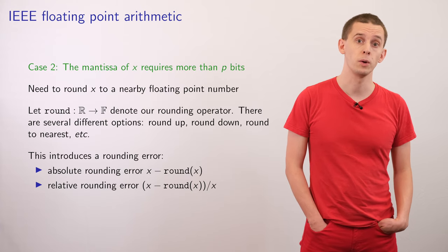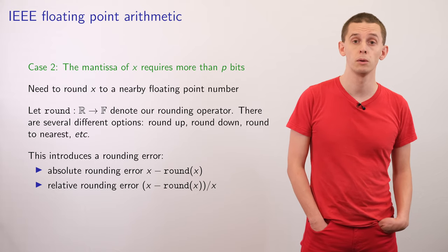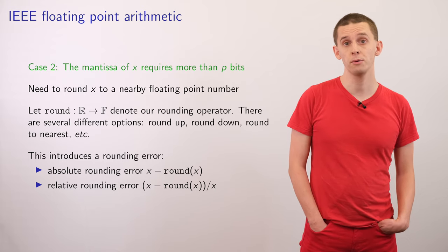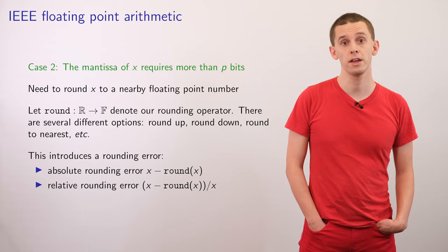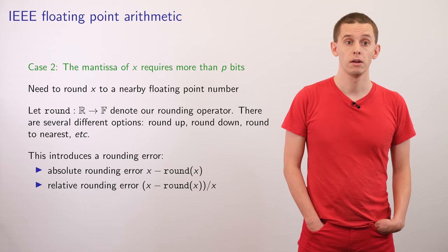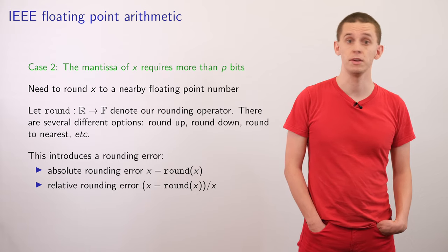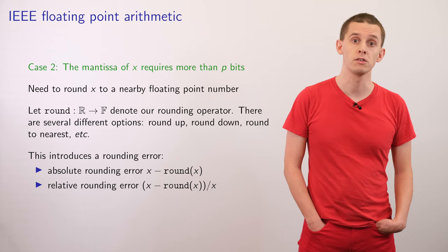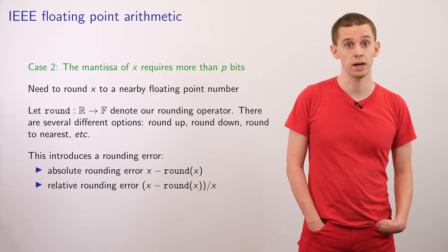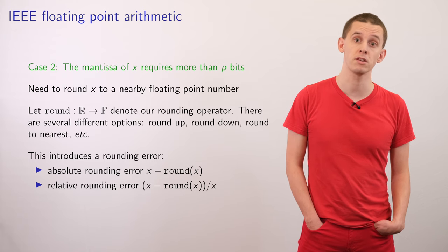In case two, where the mantissa of X requires more than p bits — as could be the case for a number like pi or e where we have an infinite expansion — we'll need to round X to a nearby number. Let's introduce an operation, round, that takes us from the reals into the floating point numbers. There are several different options: we could round the number up, round it down, or round it to the nearest value. When we do this, we introduce a rounding error. The absolute rounding error will be X minus round(X), and the relative rounding error will be (X minus round(X)) divided by X.